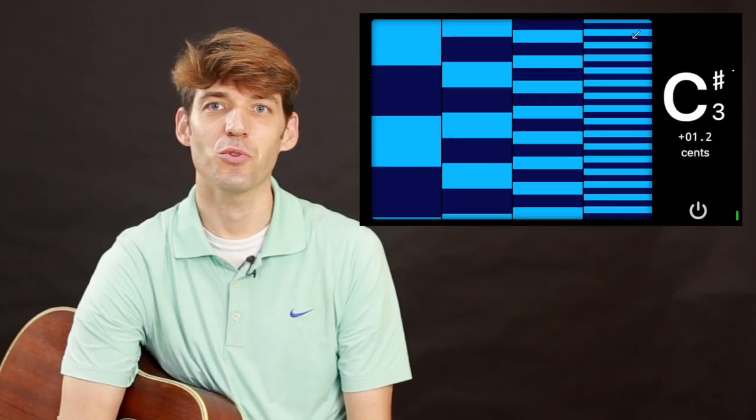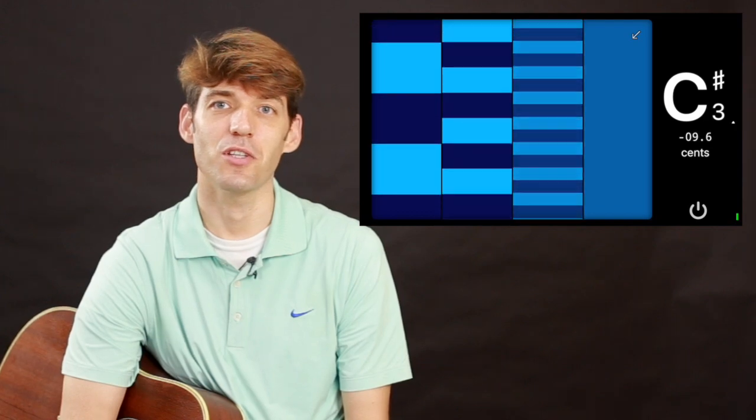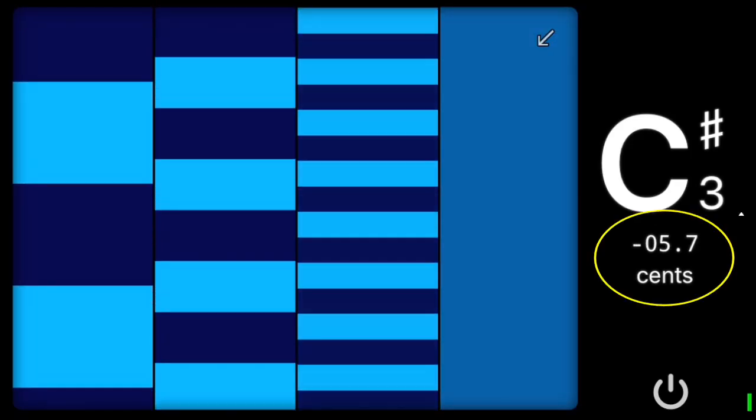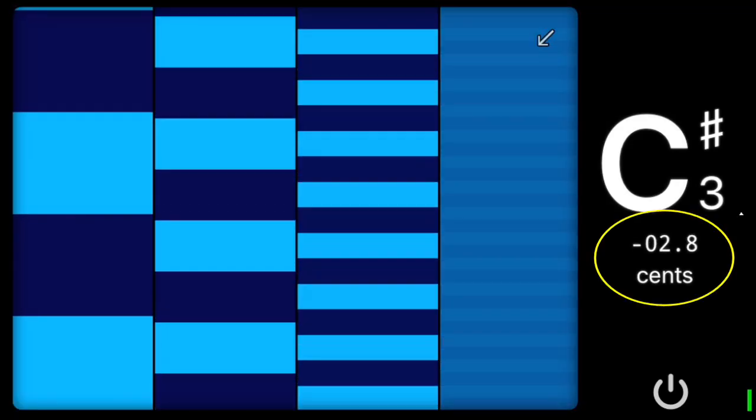But that doesn't stop your digital tuner from printing a number on the screen that tells you the string is exactly 2.35 cents sharp.